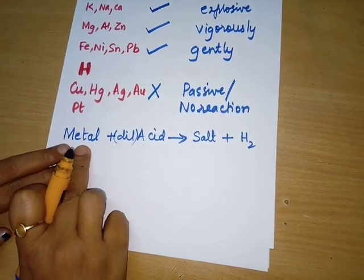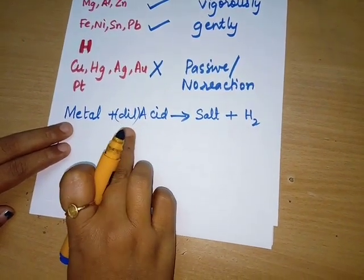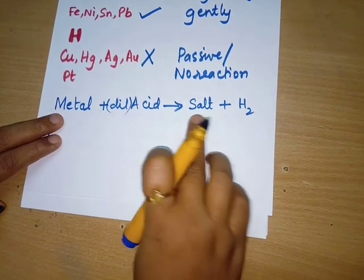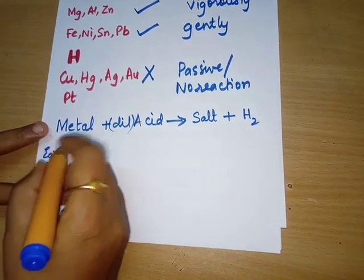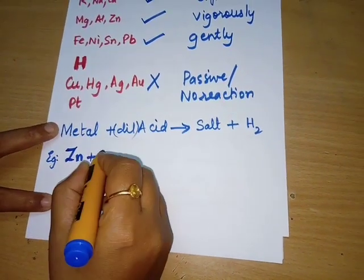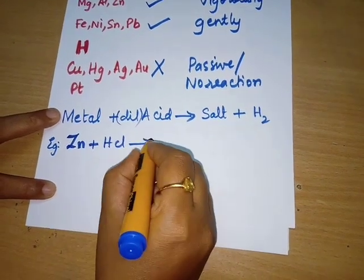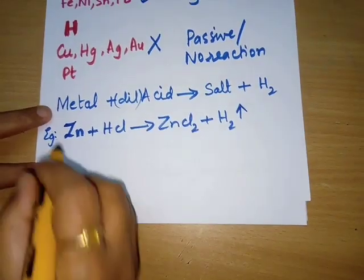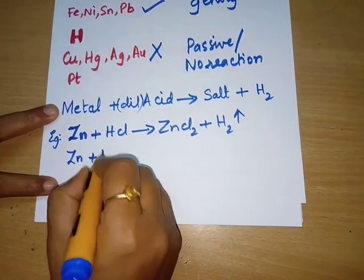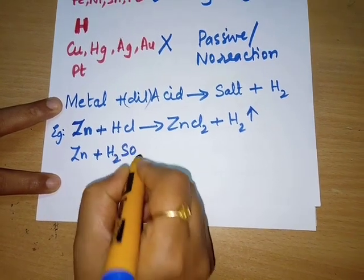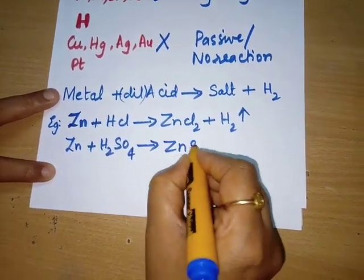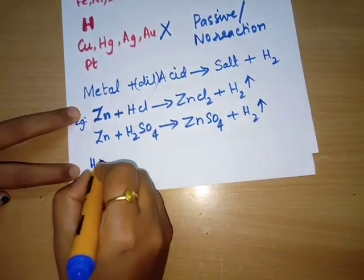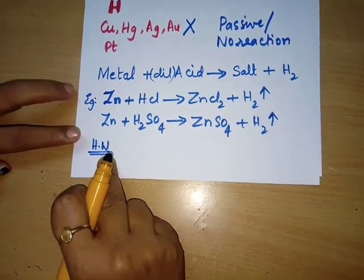The metals that react with dilute acids to form a salt and release hydrogen are called active metals. When metals react with dilute hydrochloric acid or dilute sulfuric acid, they form their respective salts and hydrogen gas is evolved. For example, zinc reacts with dilute HCl to form zinc chloride plus hydrogen, and zinc reacts with dilute sulfuric acid to form zinc sulfate plus hydrogen.